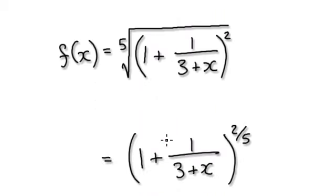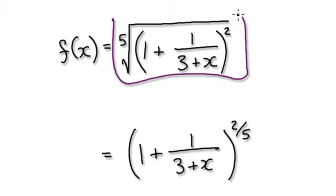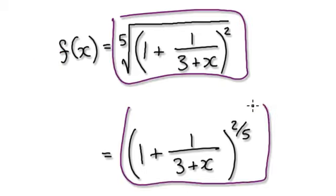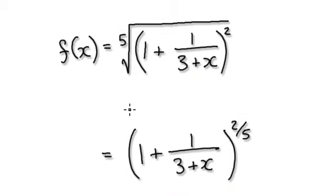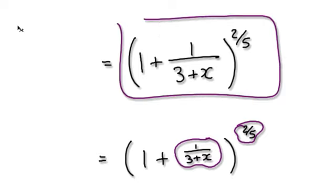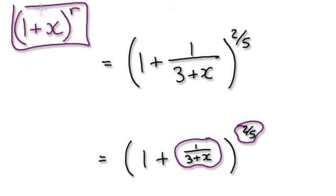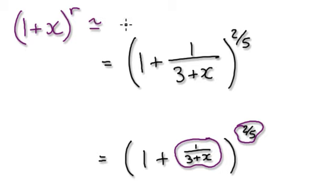Let's start again. Originally you were given this here, and this thing here is the same as this. So now visualize it as this. Once you're here, we want to get in the form of 1 plus x to the power of r. Whenever we get into this form, we can approximate it to 1 plus rx.